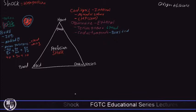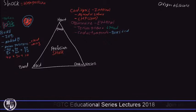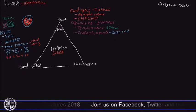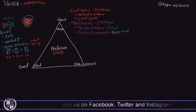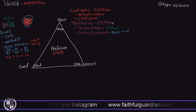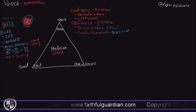In cardiac tamponade, they insert a needle into the pericardial sac surrounding the heart and draw the fluid out. In tension pneumothorax, they insert a needle or chest tube into the thoracic cavity and draw the air out. Both are correctable causes of obstructive shock. They are external in nature — there is nothing physically wrong with the heart itself.